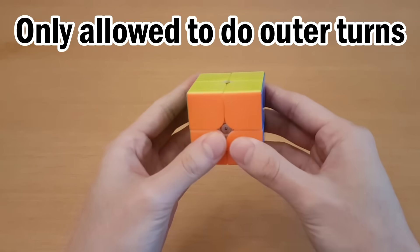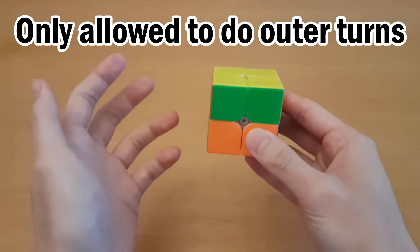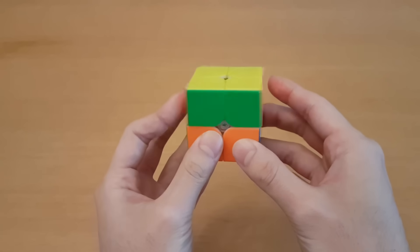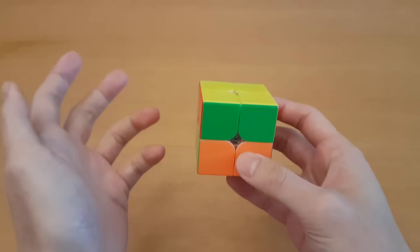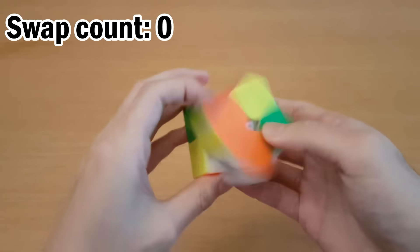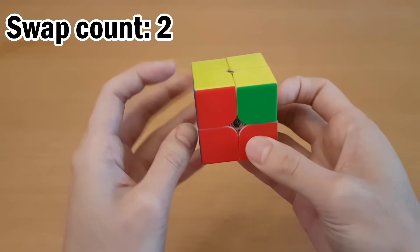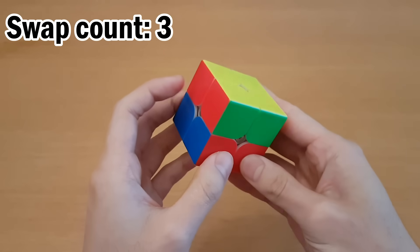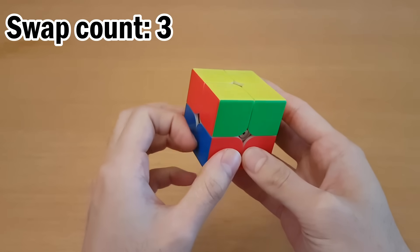But when you are only allowed to do outer turns, then you have to look at what exactly does an outer turn do and why does that only allow for certain situations on different puzzles. So on 2x2, if we look at what an outer turn does, then obviously it moves four pieces around. But let's think about that in terms of swapping pieces. So I know an algorithm that can swap these two. Let's do that now. And now I can swap these two as well. And now I'll swap these two. And as you can see, it looks like I've just done one turn. But what I've actually done is three swaps of pieces.